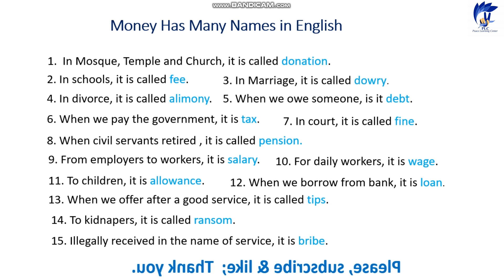Number eight: when civil servants retire it is called pension — after 60 or 65 years. When people stop working or they are getting older, the government pays them money. We call this money pension. Number nine: from employers to workers it is salary. When people receive money at the end of the month as per the agreement, we call this money salary.